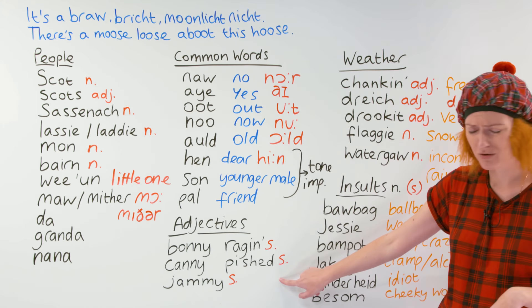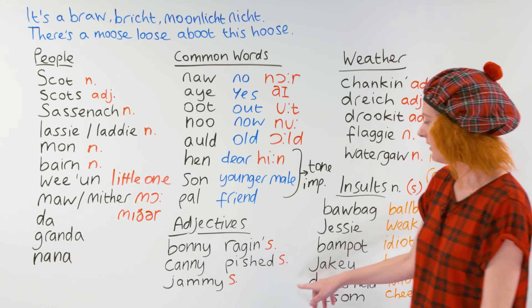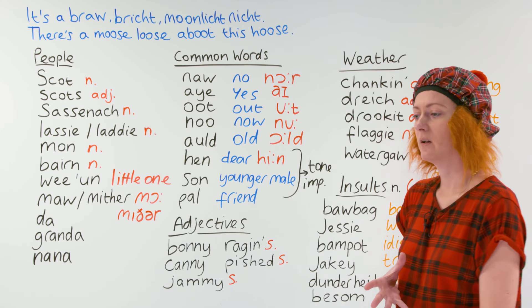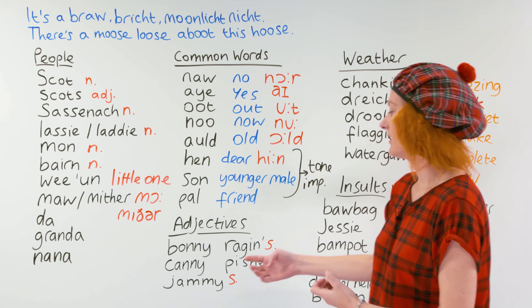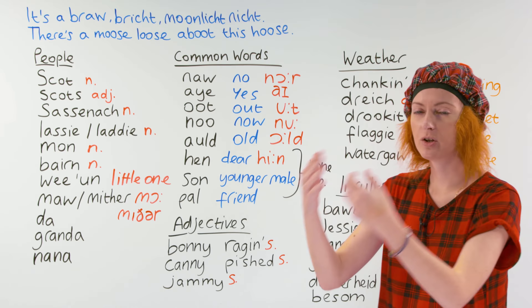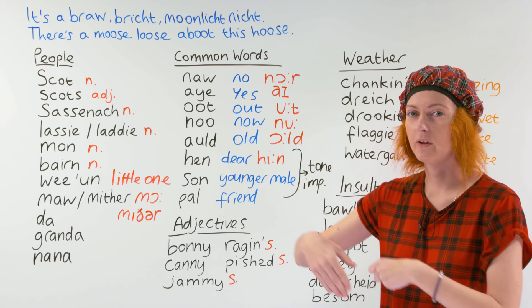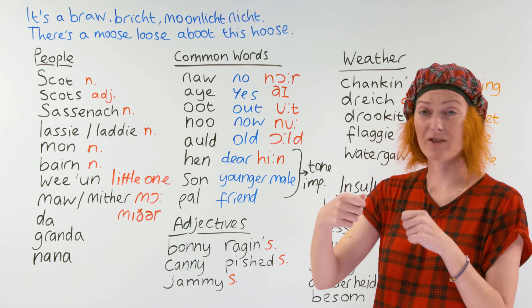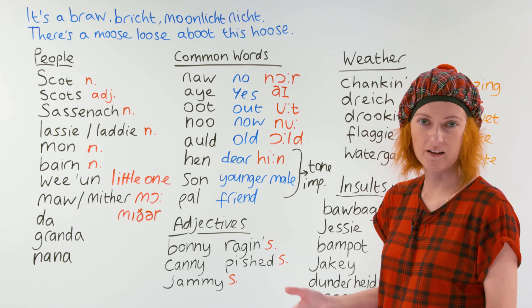Puggled means very drunk — 'absolutely puggled, he was drinking all night.' And jammy means a lucky person, not necessarily in a positive way. It's somebody who does things that are perhaps not always honest and they get good luck or they always get away with it. Jammy often comes along with 'jammy bastard,' and you'd say it kind of laughing about the thing that person got away with.